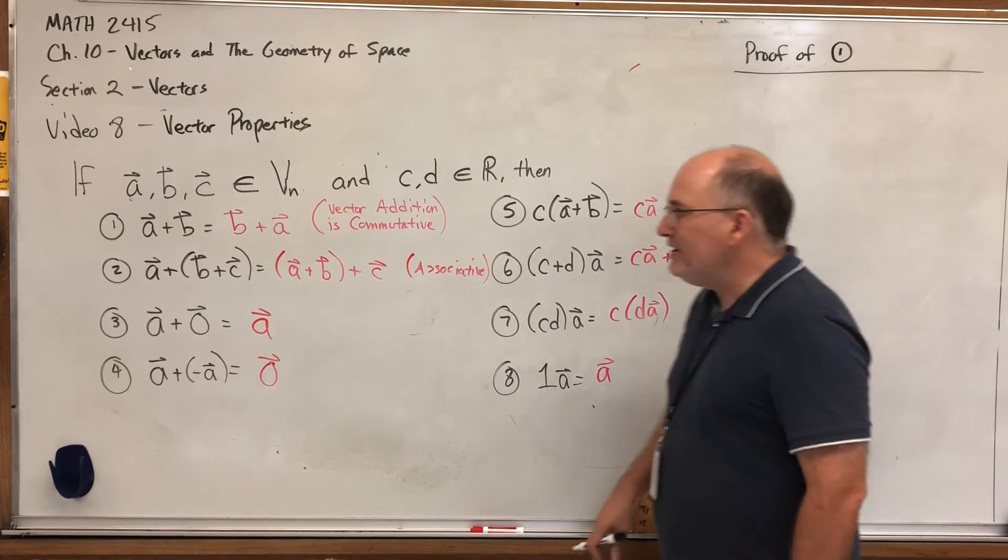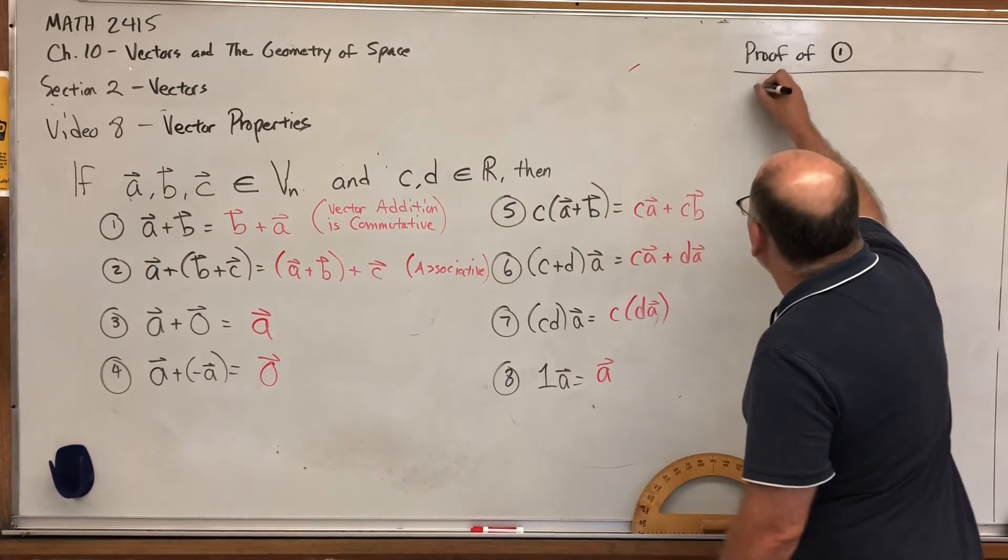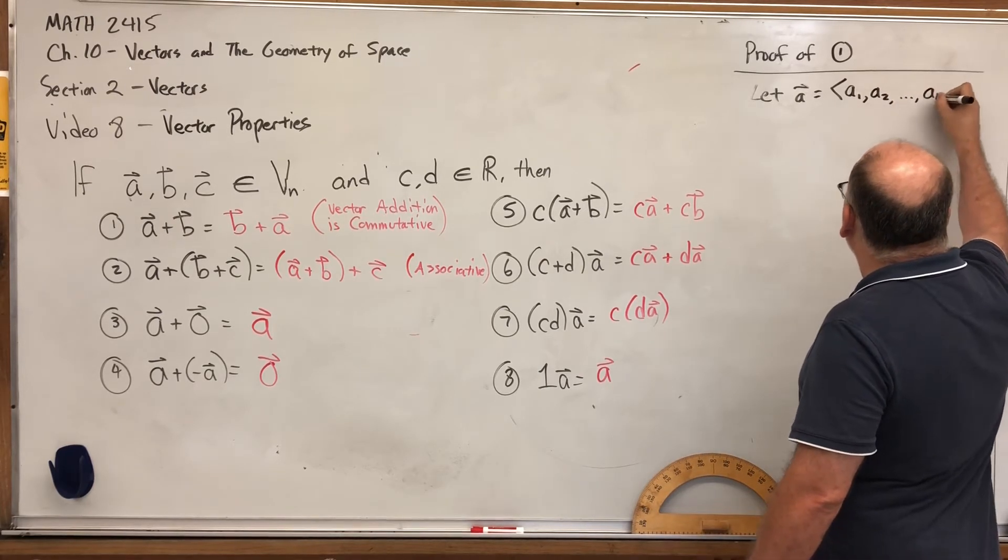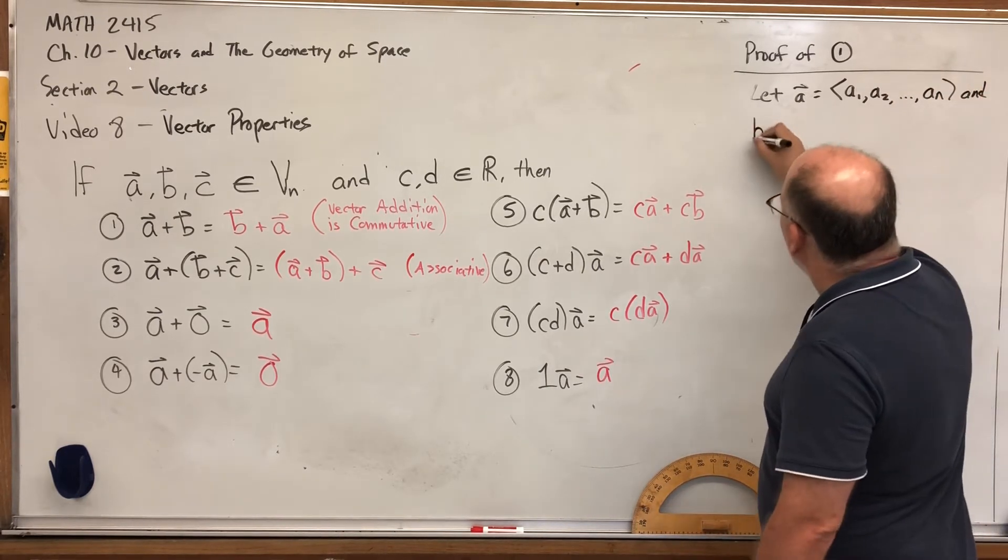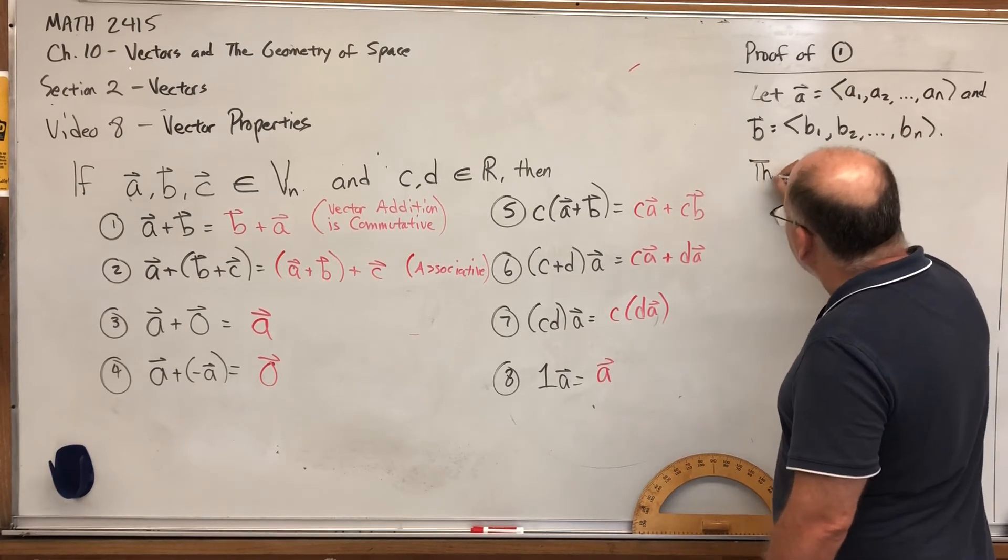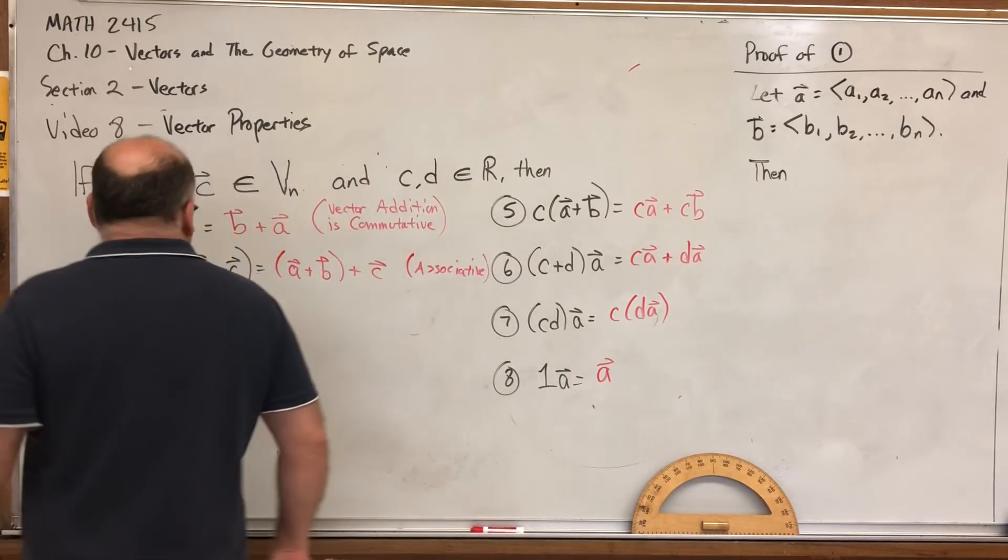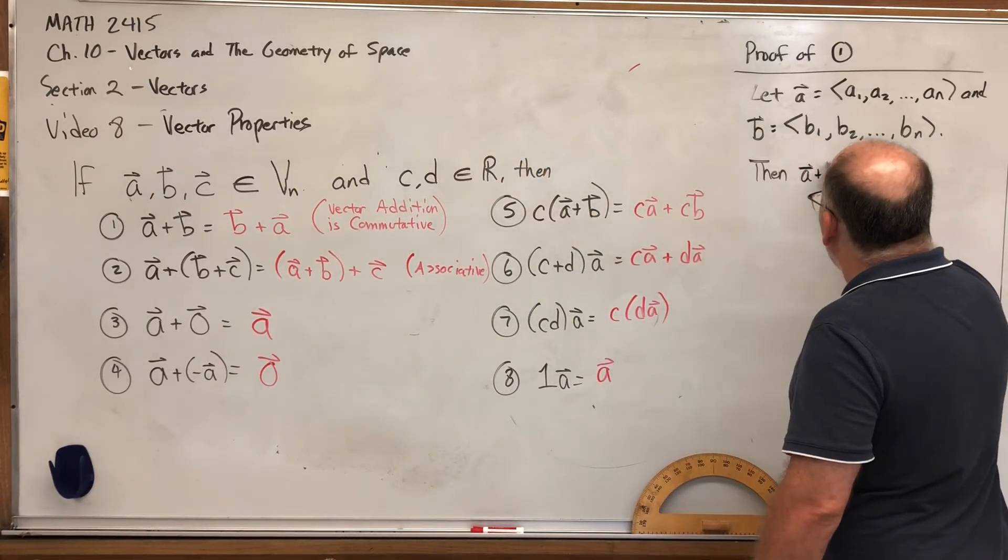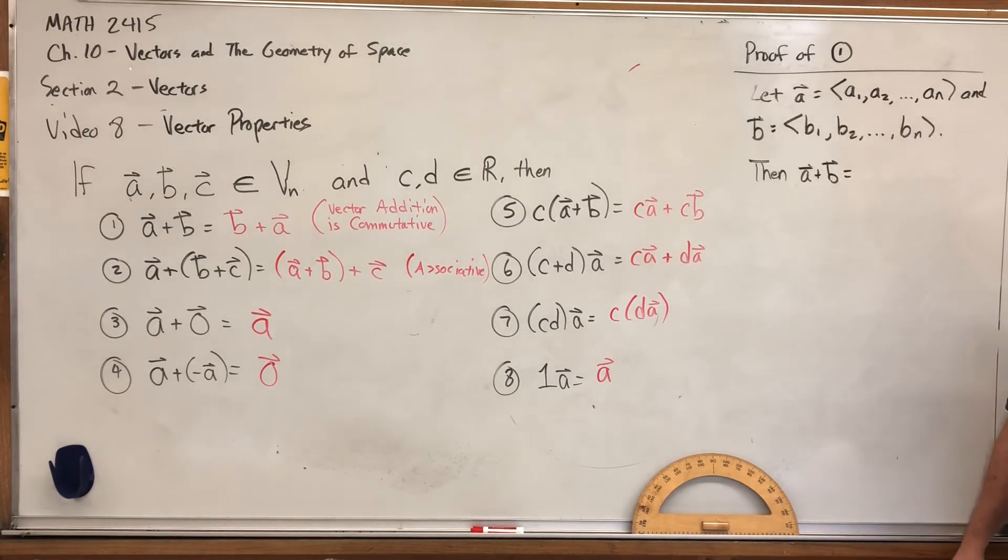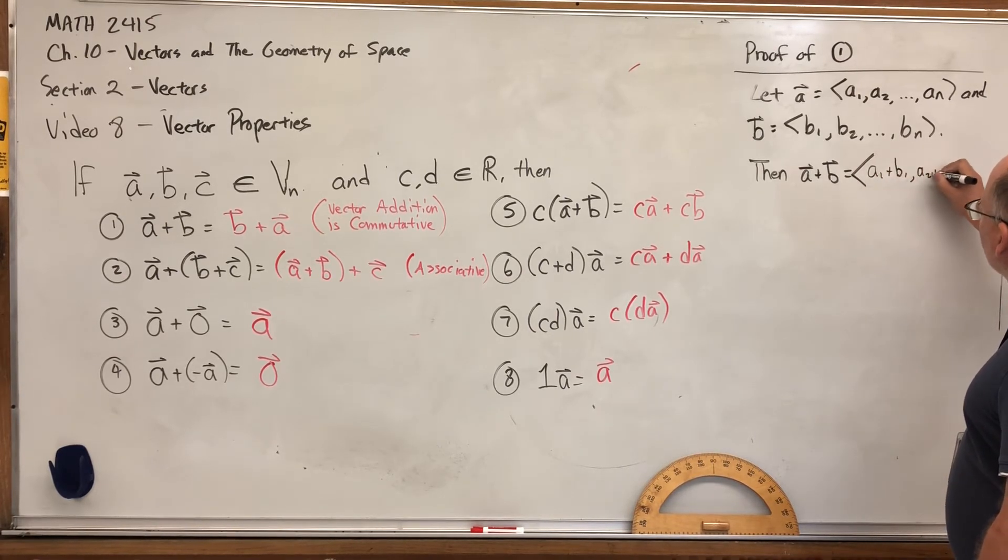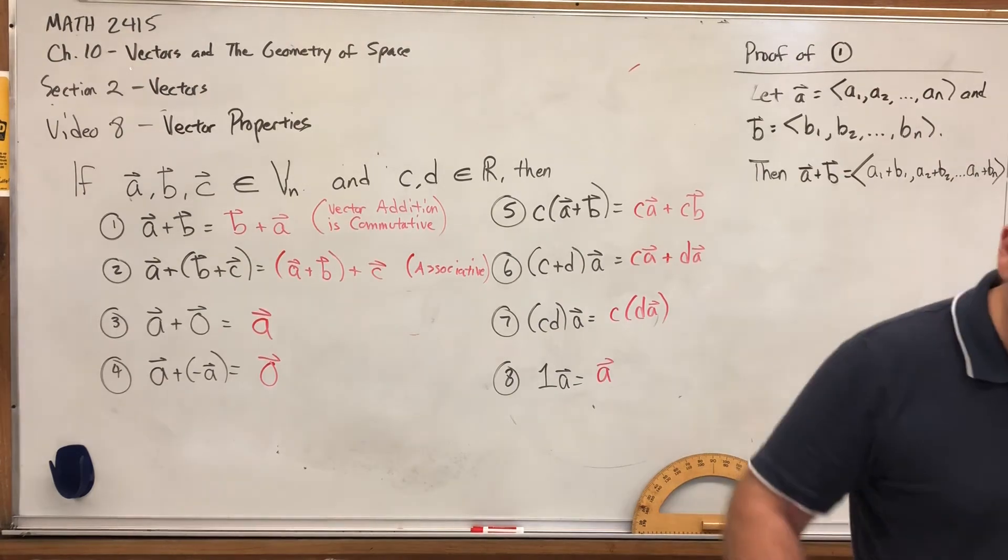I'm going to prove that property number one is true, that the addition of vectors is commutative. The way all of these proofs would work is at the component level. So if we're going to prove number one, we need to start by representing A and B in terms of components. So let's start by saying let vector A be the vector whose components are A1, A2, dot dot dot, AN. And the same thing for vector B, except I'll use B's instead of A's, B1, B2, dot dot dot, BN. Then, this is going to be a real simple proof. To prove two things are equal, you can start with the left side and wind up with the right side. So let's start with A plus B. We've already defined adding two vectors as adding their corresponding components, which means the sum of these two vectors would be A1 plus B1, comma, A2 plus B2, comma, dot dot dot, AN plus BN. And I'm sorry, I think I'm reaching the limits of where my screen is picking up the board.